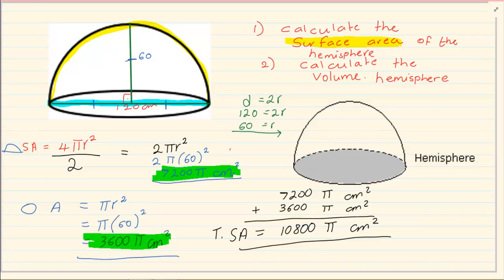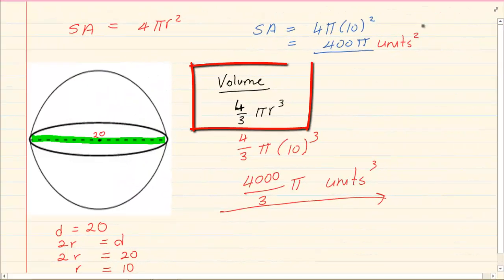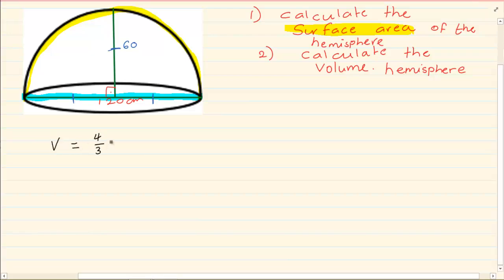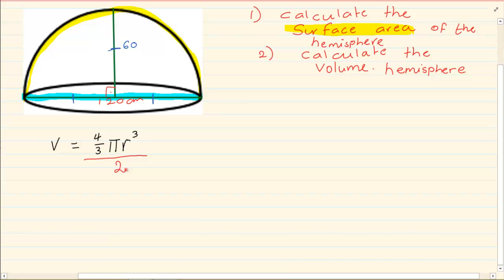Once you have calculated the total surface area, the next question is to calculate the volume of a hemisphere. Remembering from a sphere, the volume of a sphere was 4/3 πr³. The volume of a hemisphere will be that answer divided by 2. We already know r = 60, so we take 4/3 πr³ and divide it by 2.